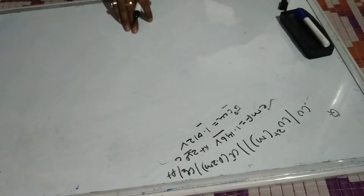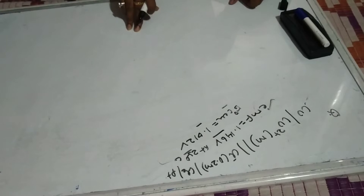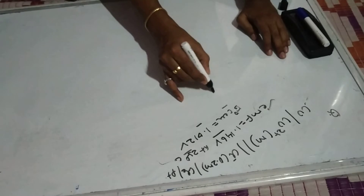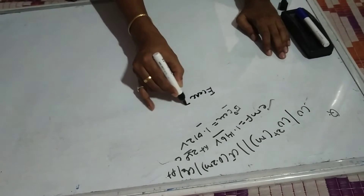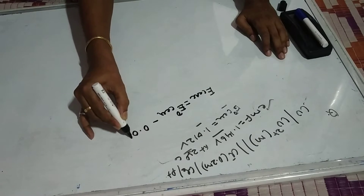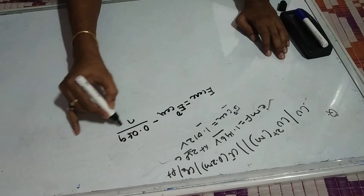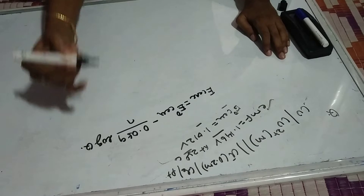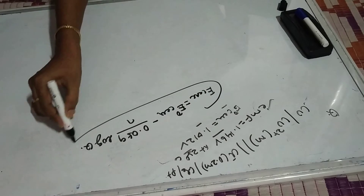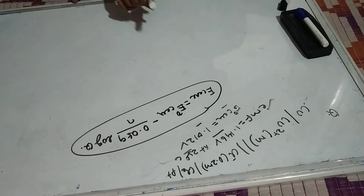Dear students, today I will go through some problems regarding the Nernst equation. In the Nernst equation, we know E cell is equal to E naught cell minus 0.059 by N into log Q. So this is the Nernst equation. Let's say I want to apply the Nernst equation to find what is the concentration of Cu²⁺ in the given cell representation.